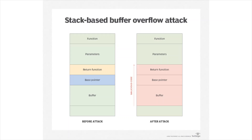The trick is: how do we find the address of the malicious code? What we do is create a NOP sled — we add a lot of NOP (no operation) instructions before the malicious code. A NOP operation just goes to the next step. So we add a bunch of NOPs, then append our malicious code, and write the address of anywhere within that NOP sled into the return address of the function.